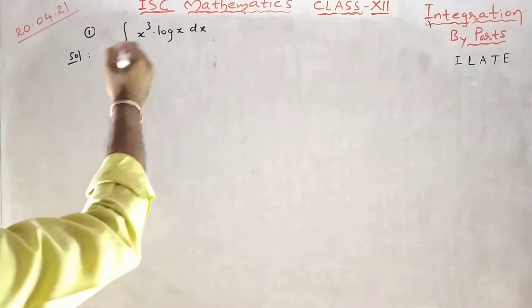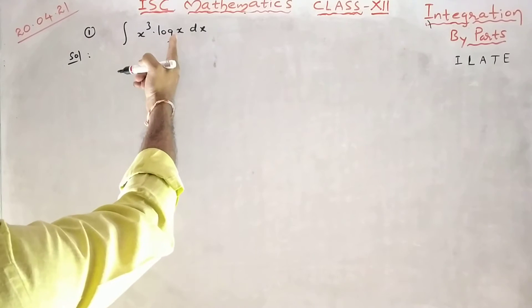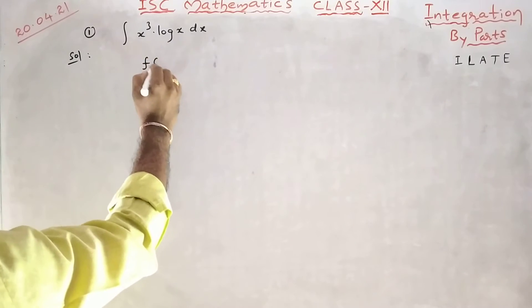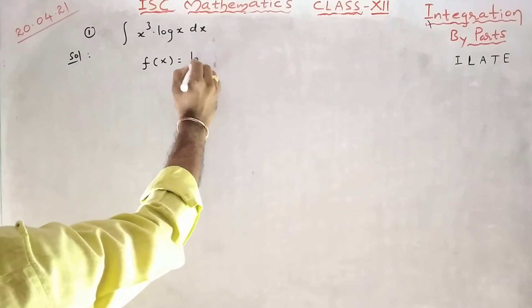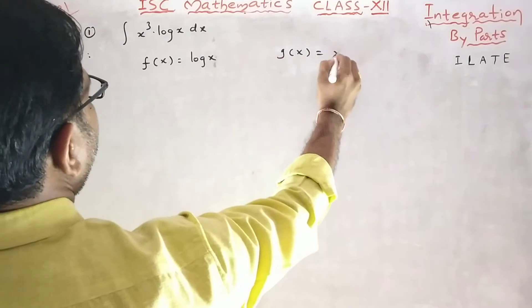Look at this question: integral x cube log x dx. By using the ILATE formula, I must consider this is algebra, this is logarithmic. So logarithmic we have first, so f of x equal to log x and g of x equal to x cube.